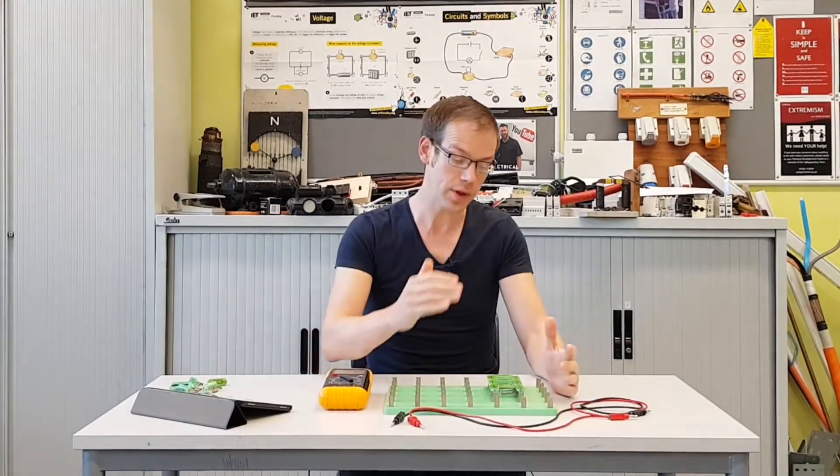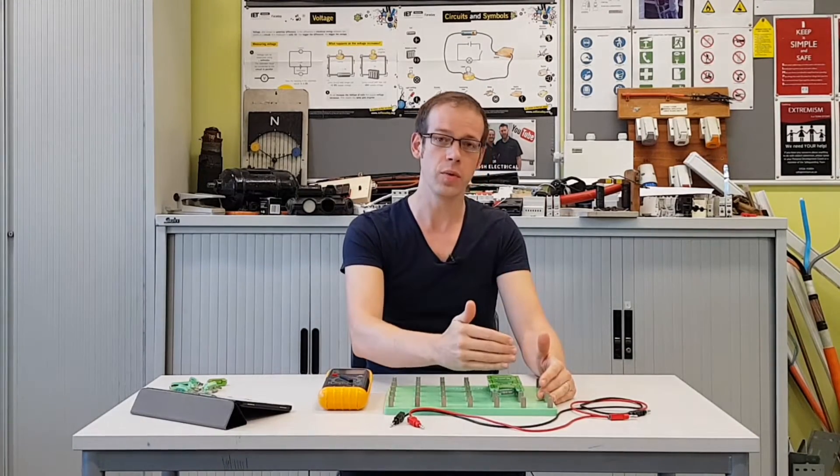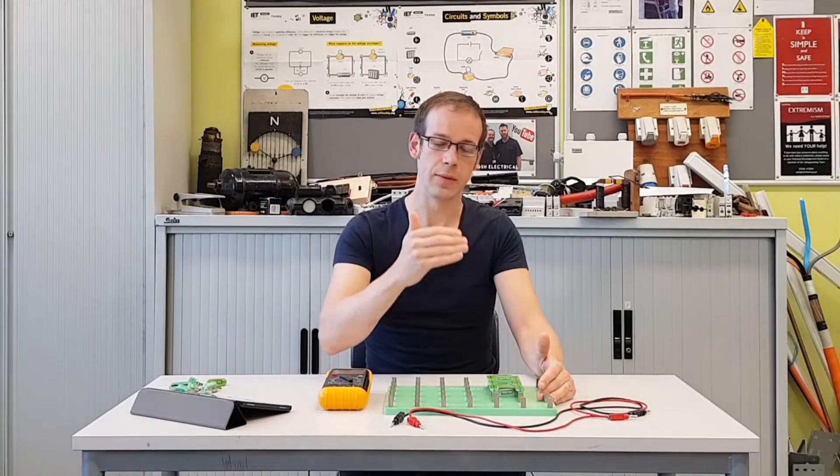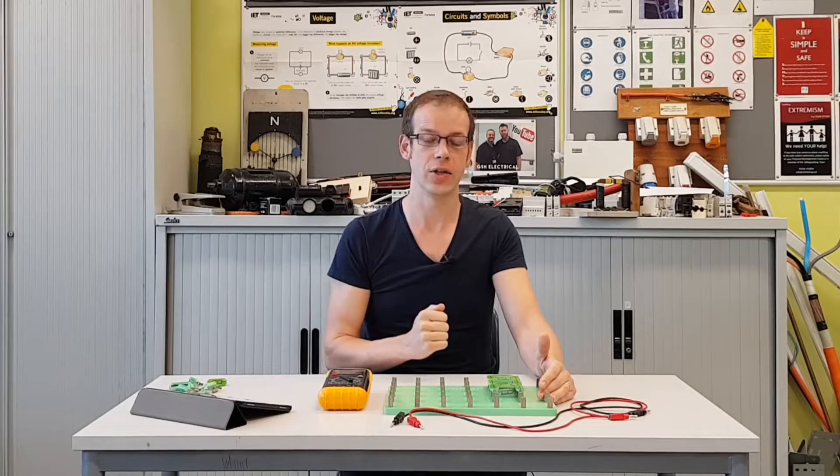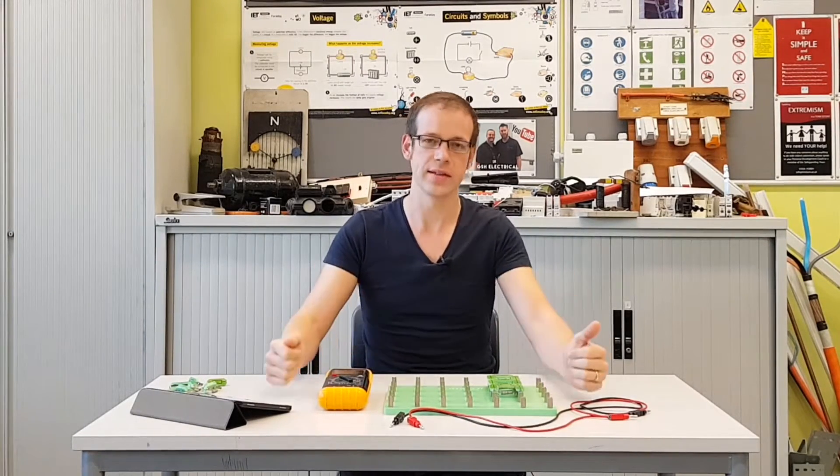So in this video we're going to have three resistors connected in parallel. We won't know what the value of one of the resistors is, but we'll measure the total resistance and then we'll show you how to rearrange the calculation so we can find the value of the missing resistor. So let's bring the camera in and we'll get started.